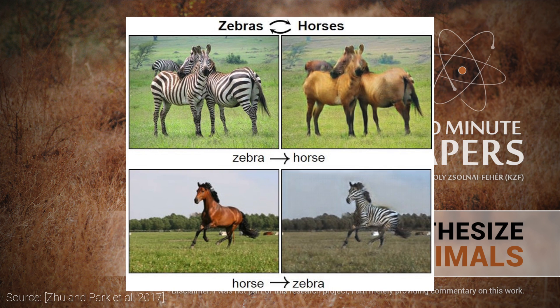Have a look at this! Imagine that we like the background of this image, but instead of the zebras, we would like to have a couple of horses. No problem, coming right up — this algorithm synthesizes them from scratch.